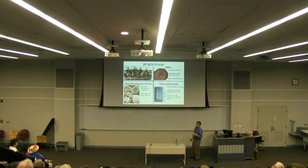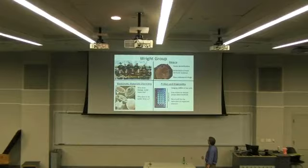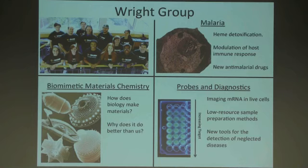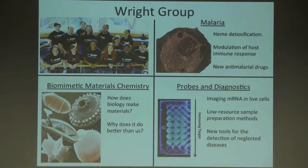This is my research group — the graduate and undergraduate students who actually do the experiments in my lab. We basically focus on three things: drug discovery for malaria, understanding biomimetic materials — how nature makes materials unlike anything we can make in the laboratory — and what I'm going to talk about today: how you can make probes and diagnostics for discovering who has a disease.